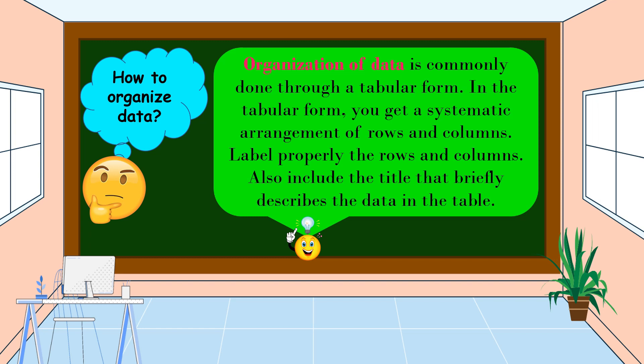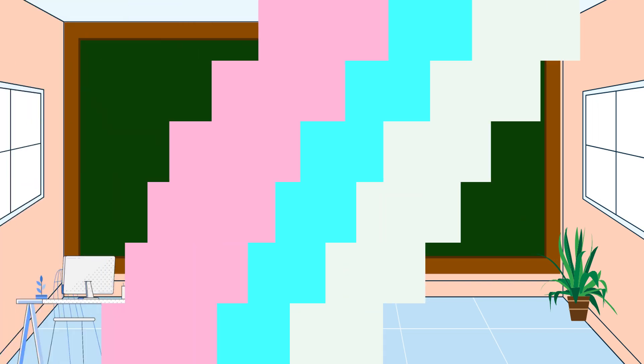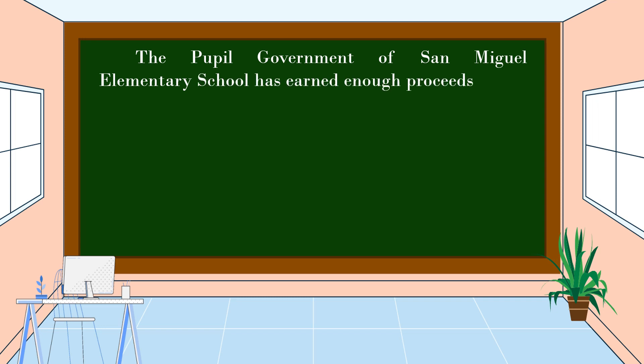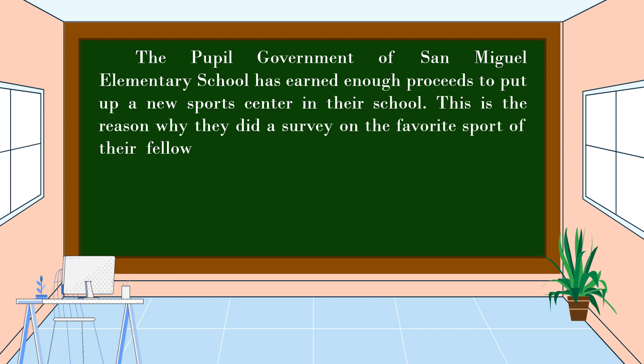To understand fully our lesson for today, let's study this example. The pupil government of San Miguel Elementary School has earned enough proceeds to put up a new sports center in their school. This is the reason why they did a survey on the favorite sport of their fellow students.